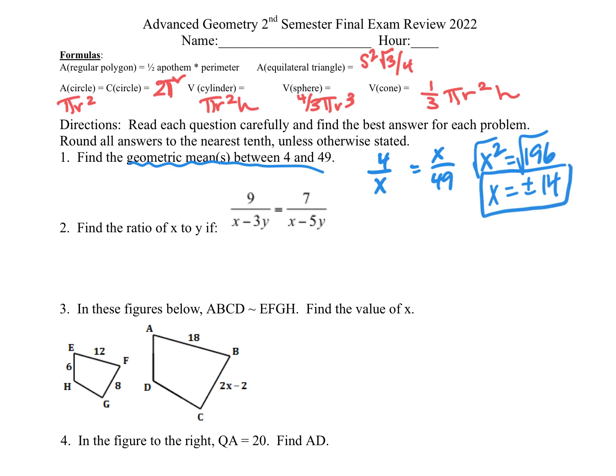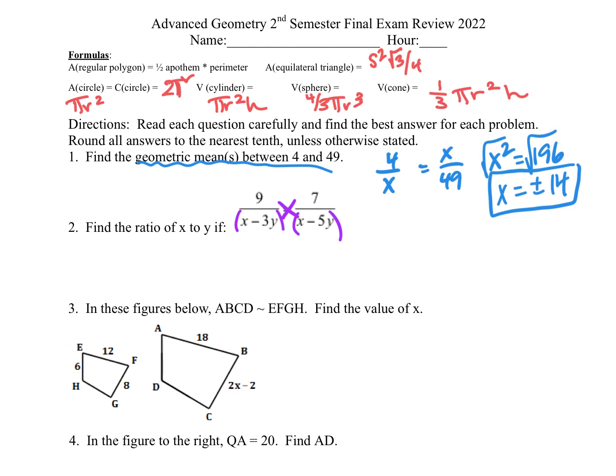On our second one, we're going to do the same idea here. We are going to cross multiply, but make sure we put these guys in parentheses. So now we're going to cross multiply here. So it will be 9 times X minus 5Y equals 7 times X minus 3Y. Then we will distribute 9X minus 45Y equals 7X minus 21Y.